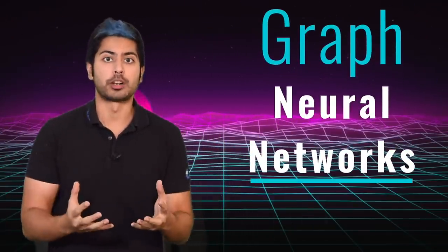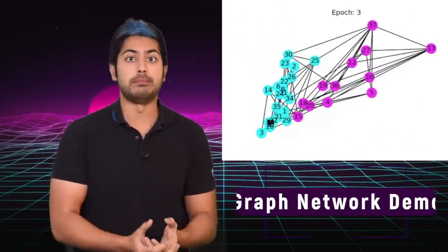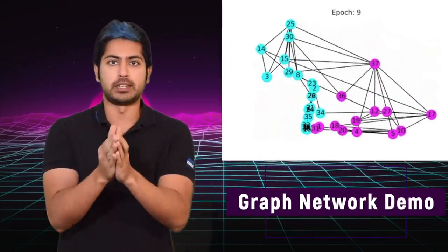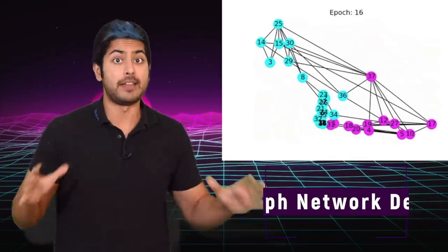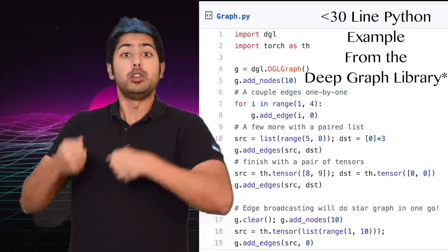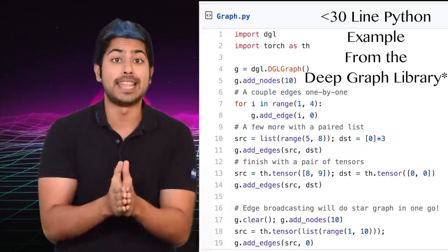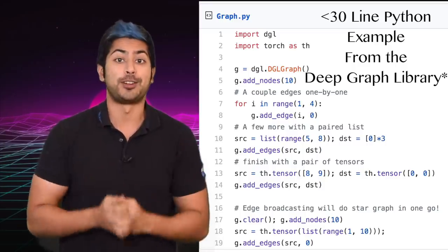Graph neural networks are starting to get really popular in the AI community because of their unique ability to learn from graph data efficiently. In this episode, I'm going to show you how they work, how they're being used to solve real-world problems, and how you can build your own today in a few lines of Python code.